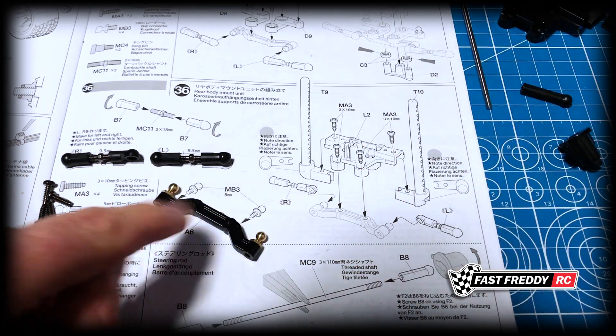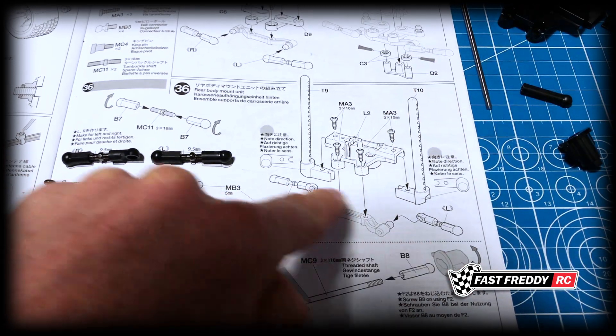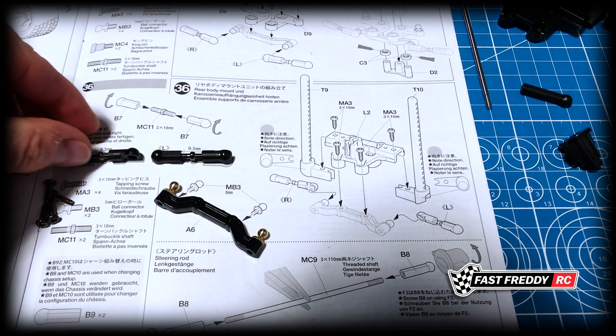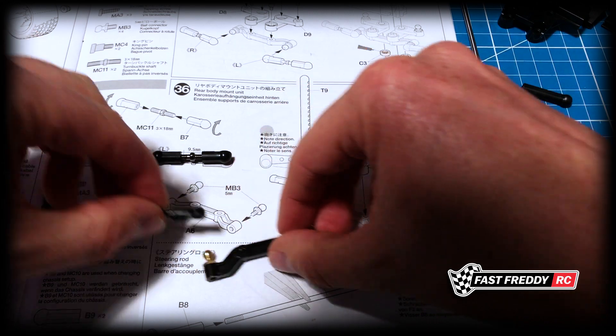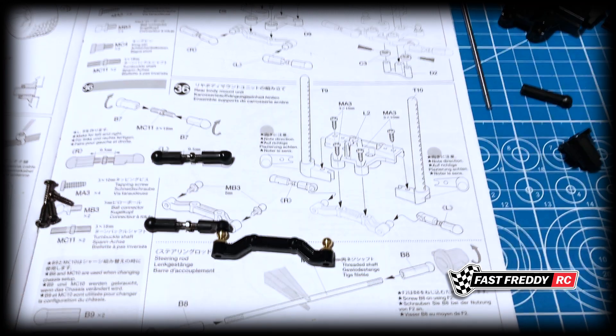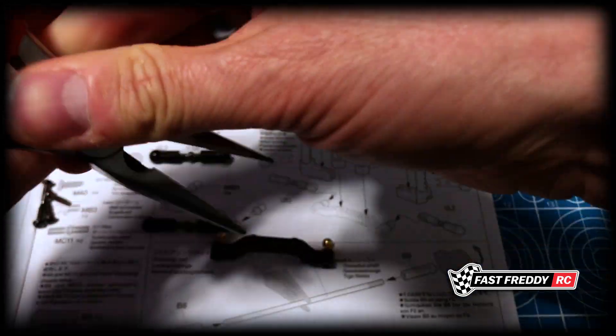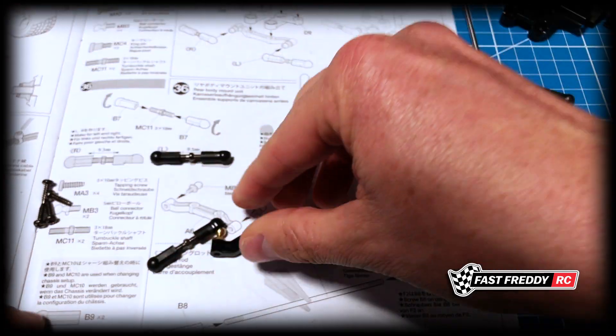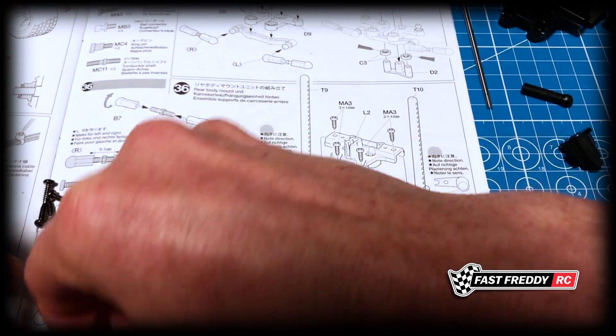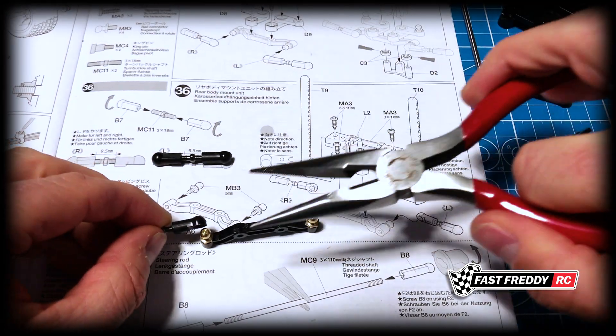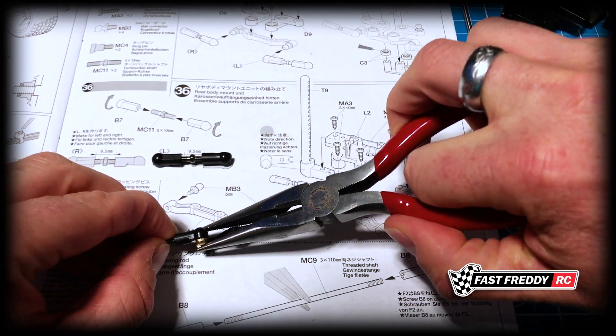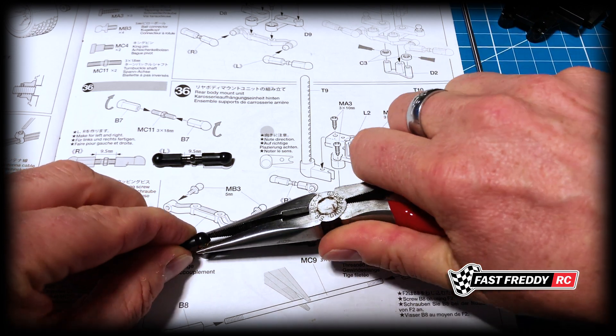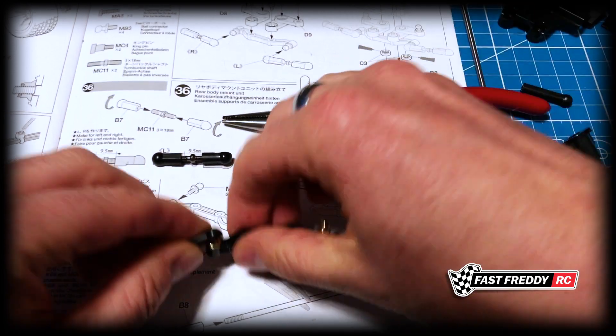There we go, we're all the way to the end. Now it's showing you attaching all of this. The right one has got to fit onto there, so I'll grab the pliers. Take that ball connector from the side. There we go, there's one of them on.